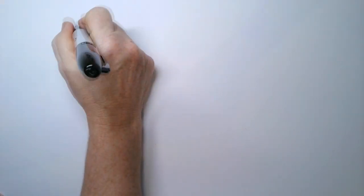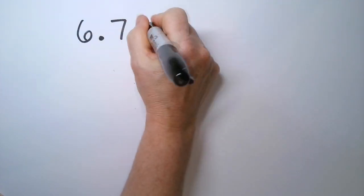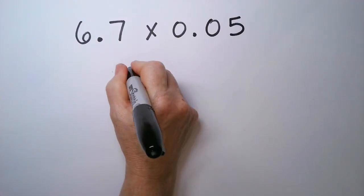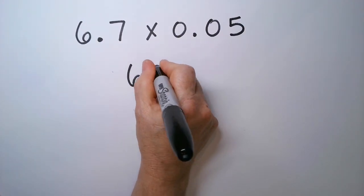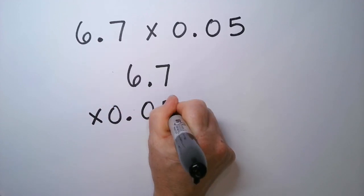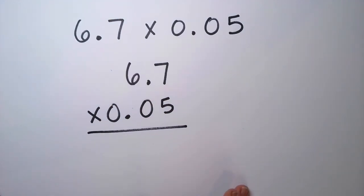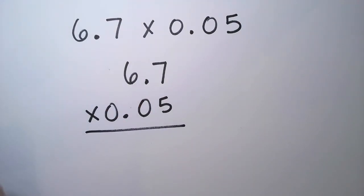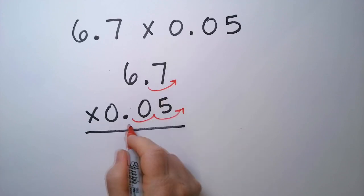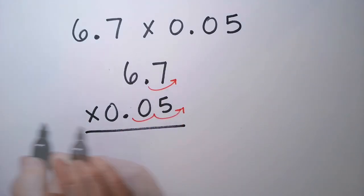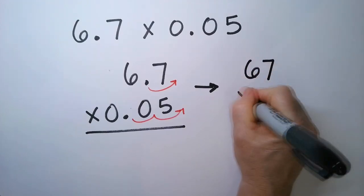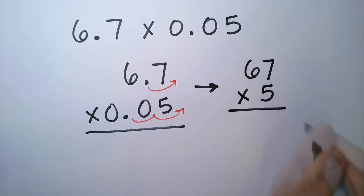I have a 6.7 times a 0.05. So I'm just going to stack the numbers, 6.7 times 0.05. Again, I don't care if the decimal points are lined up or not, because we're actually going to take the decimal points out. So I have 1 hop, 2, 3. So 3 hops total. So turn this into a problem that's easier for us to do. 67 times 5.